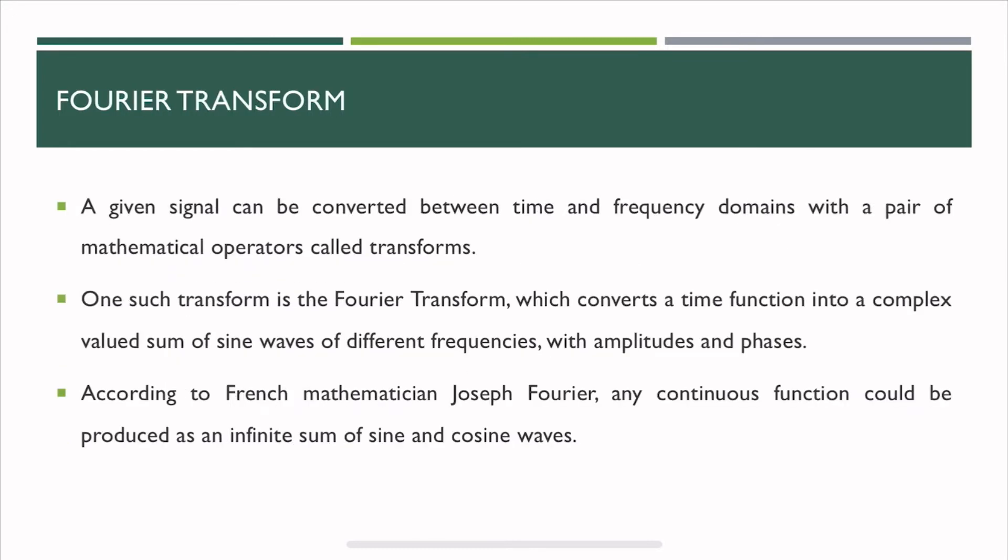Now we have studied about time domain and frequency domain, but how does the conversion happen? How do you convert from the time domain to frequency domain? That's where the Fourier transform comes into play. Any given signal can be converted between time and frequency domain with a pair of mathematical operators called transforms, and one such transform is a Fourier transform. It converts a time function into a complex value sum of sines of different frequencies with averages and phases.